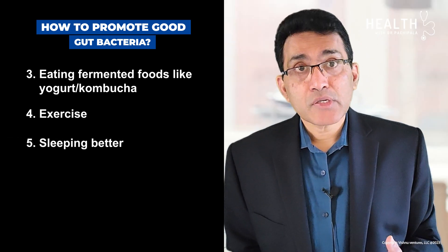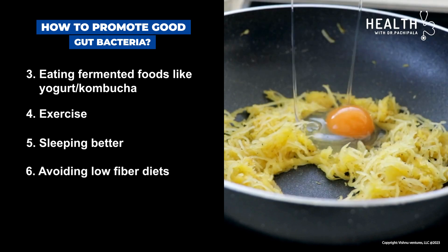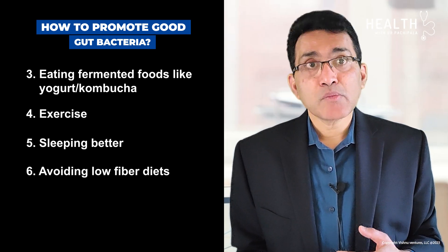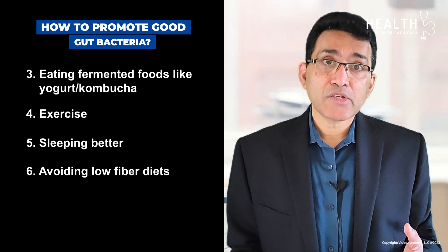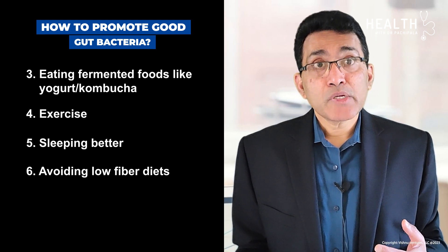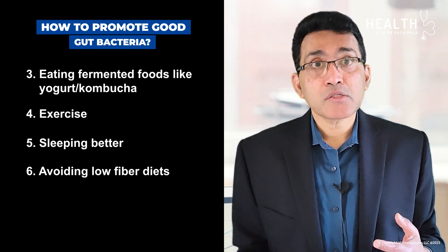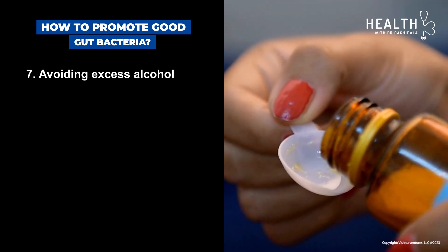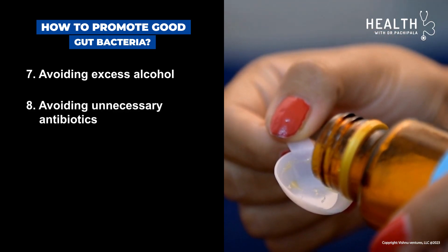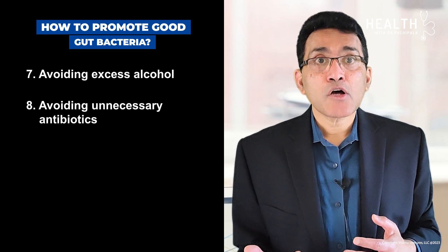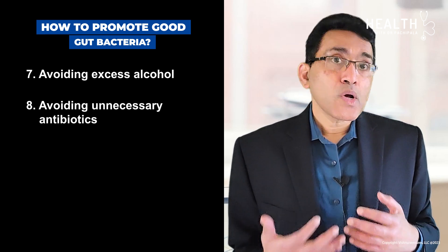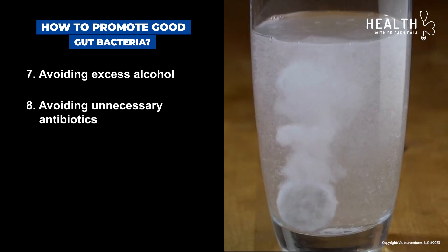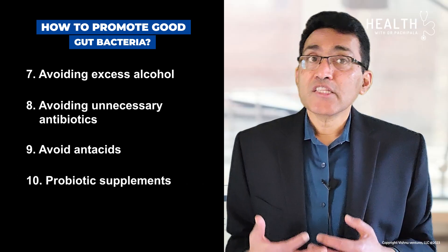Avoiding low-fiber diets — such as highly processed foods, foods high in sugar, salt, and preservatives, red meat, diets high in animal protein, and fried food — improves gut bacteria. Increased consumption of red meat increases a chemical that can potentially cause heart attacks and stroke. Avoiding excess alcohol is also important, as alcohol can kill good bacteria. Avoiding unnecessary antibiotics is equally critical, as one antibiotic course has been shown to alter your gut microbiome for over a year. Avoid antacids if possible.